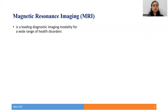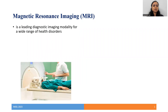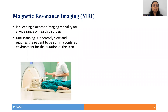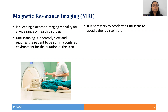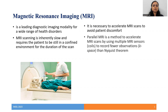Magnetic resonance imaging is a leading diagnostic imaging modality for a wide range of health disorders, but it has a limitation that it is an inherently slow process and requires the patient to be still in a confined environment for the entire duration of the scan. It is necessary to accelerate MRI scans to avoid patient discomfort. Parallel MRI is a method to accelerate MRI scans by using multiple MRI sensors or coils to record fewer observations, also known as k-space, than required according to the Nyquist theorem.